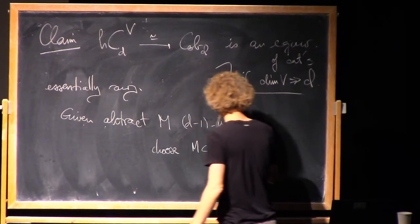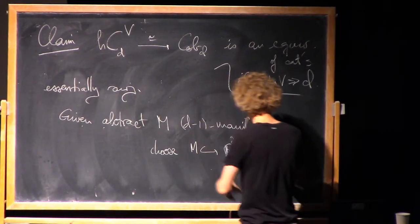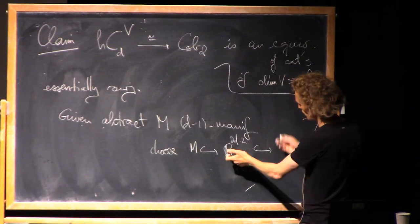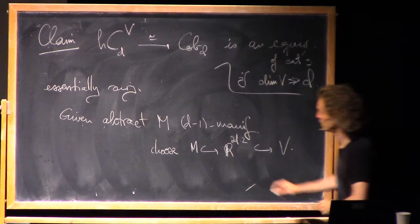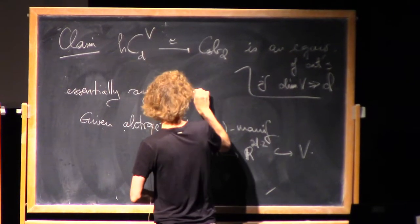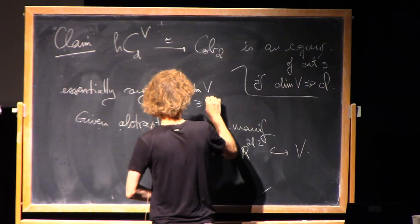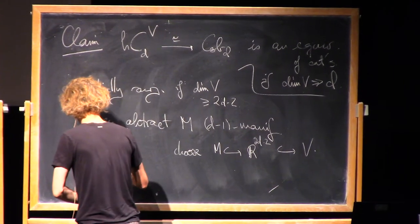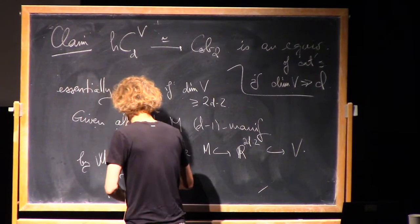Choose M. I can embed it into R^{2d-2}. And then dimension of V just means it needs to be big enough that there's a linear embedding of this into V. So it's essentially surjective if dimension of V is bigger than or equal to 2d-2 by Whitney embedding.